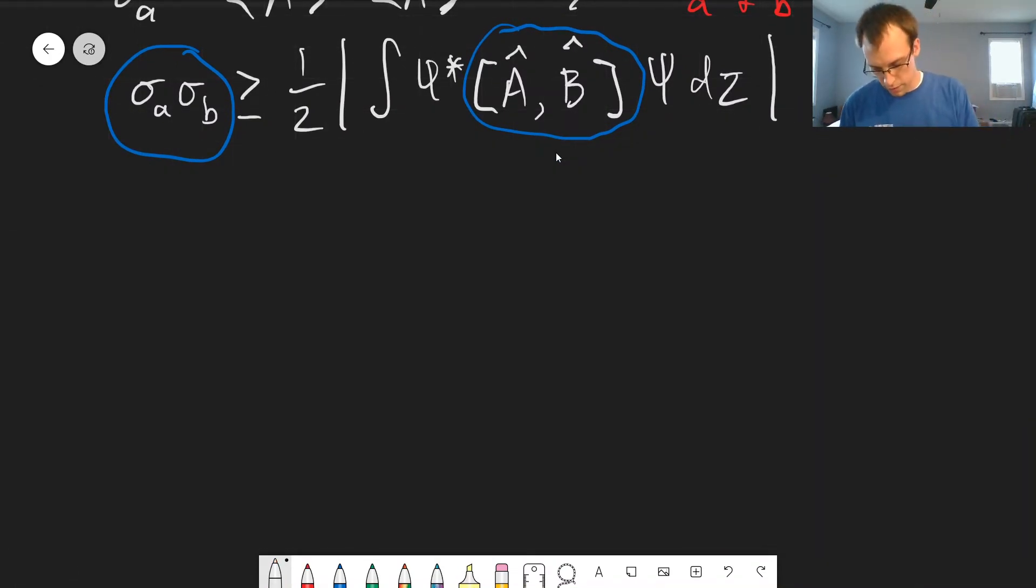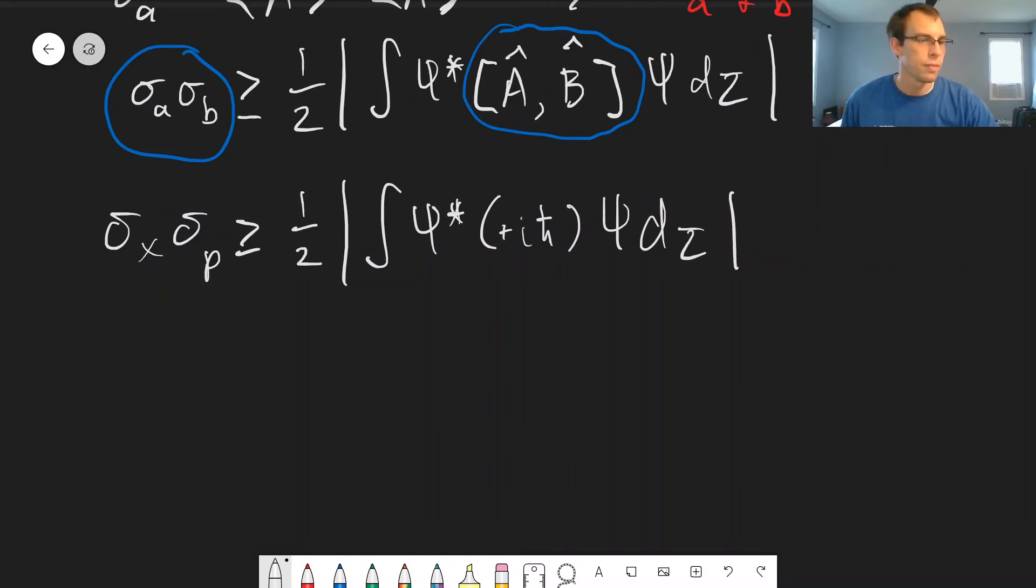So we have sigma x sigma p is greater than or equal to one half times absolute value of the integral of psi star times positive i h bar psi d tau. We can pull out the i h bar of the integral of psi star psi d tau.